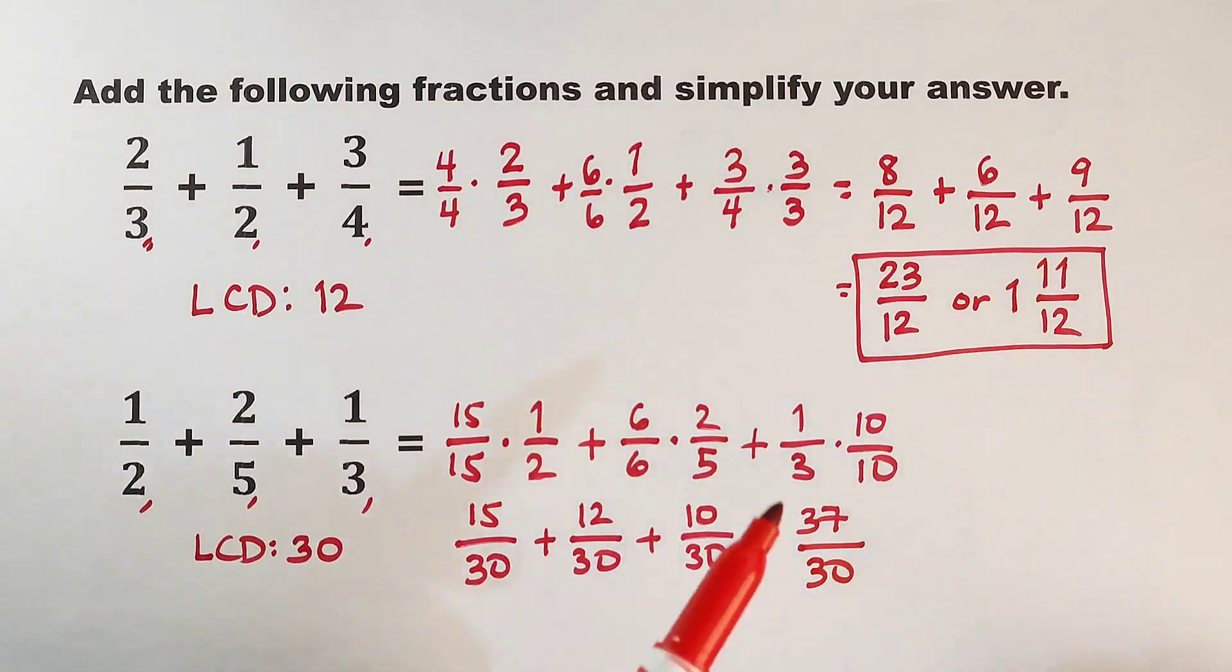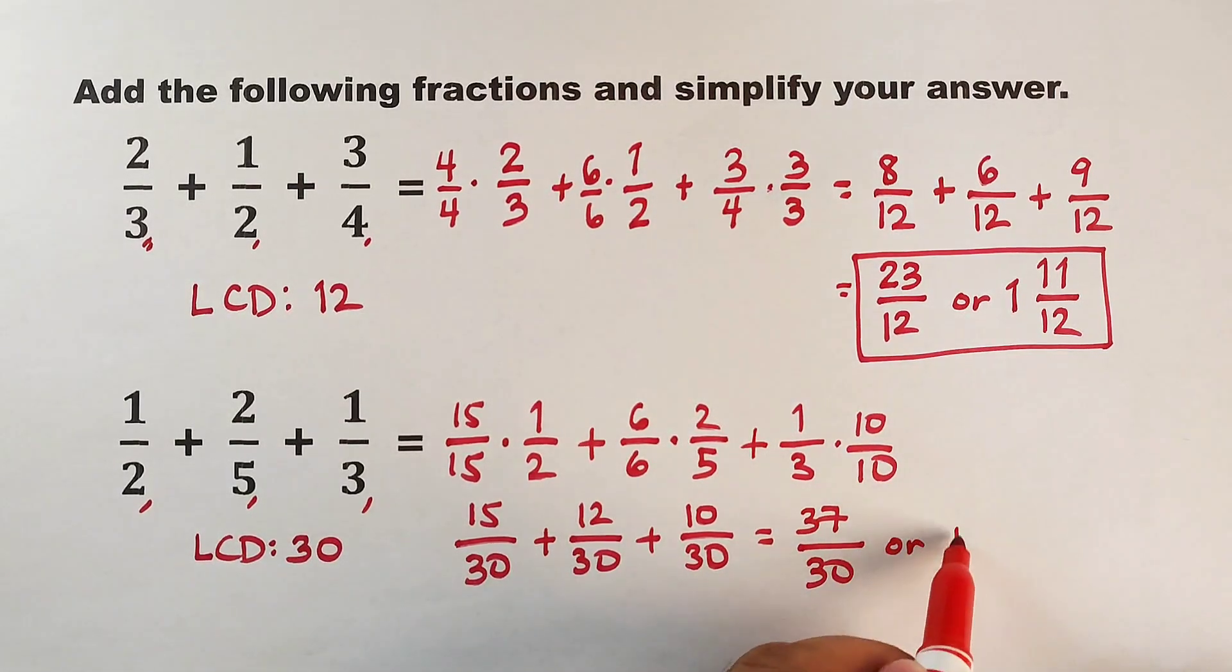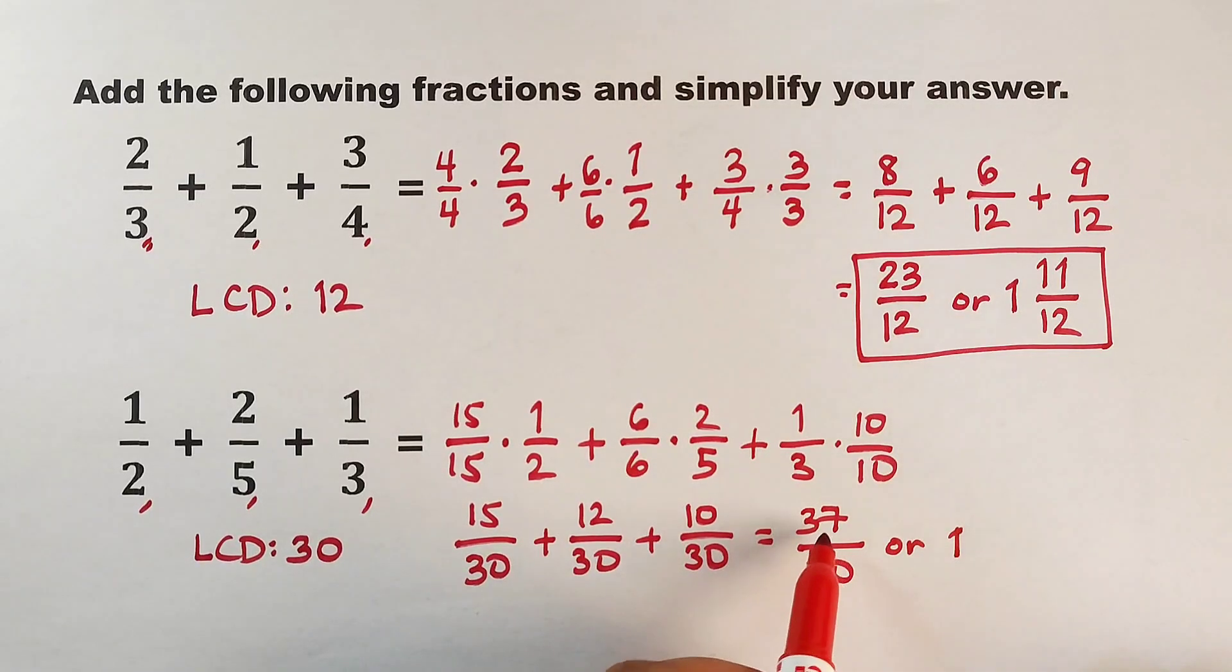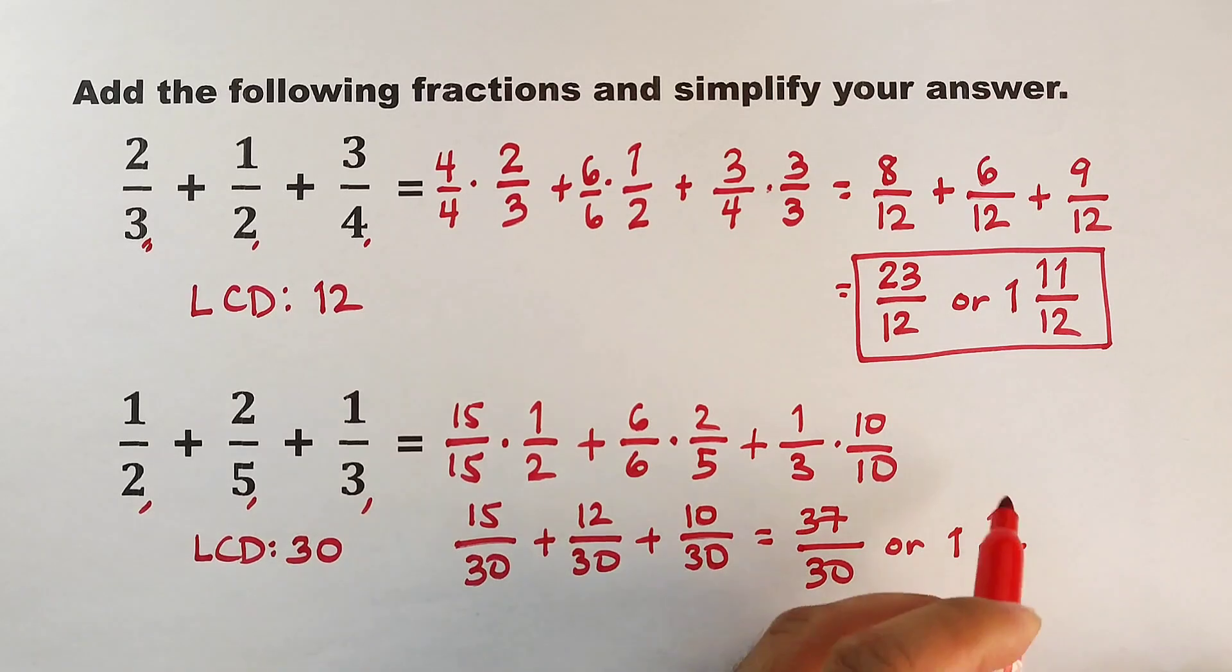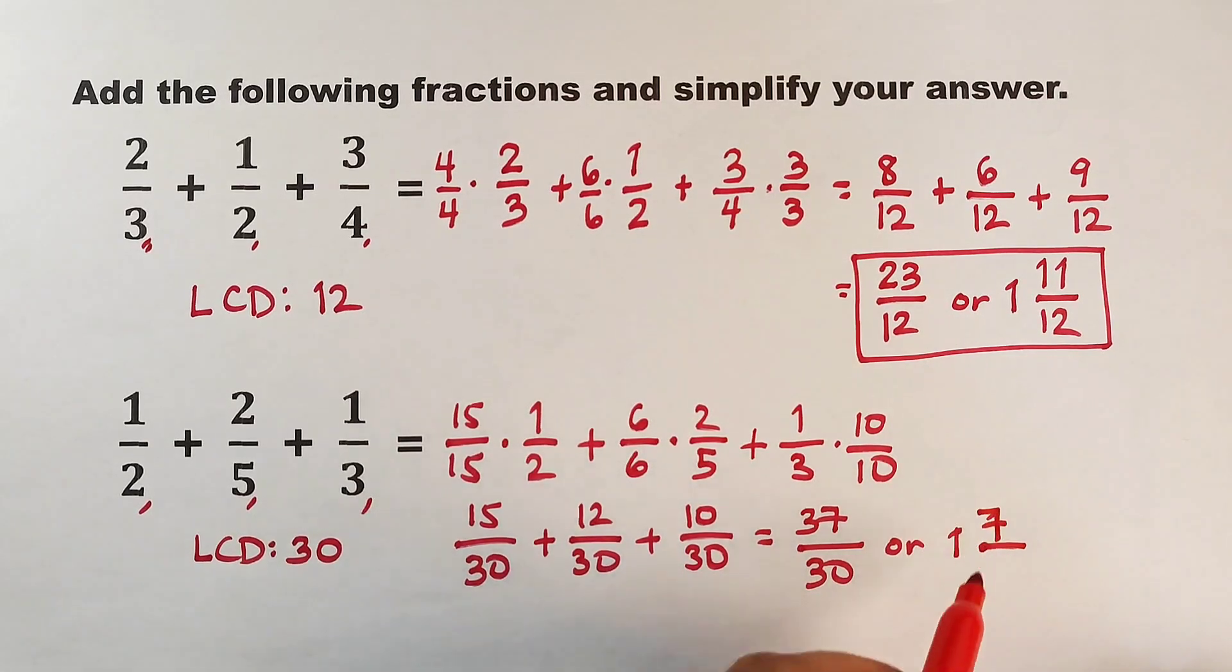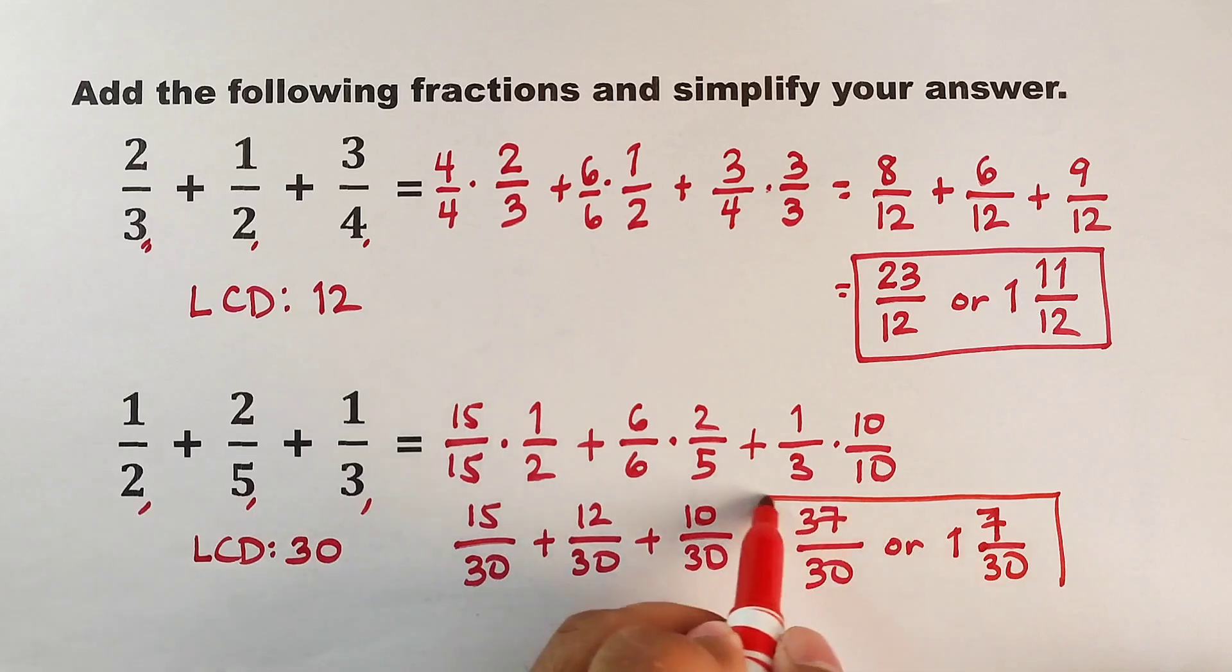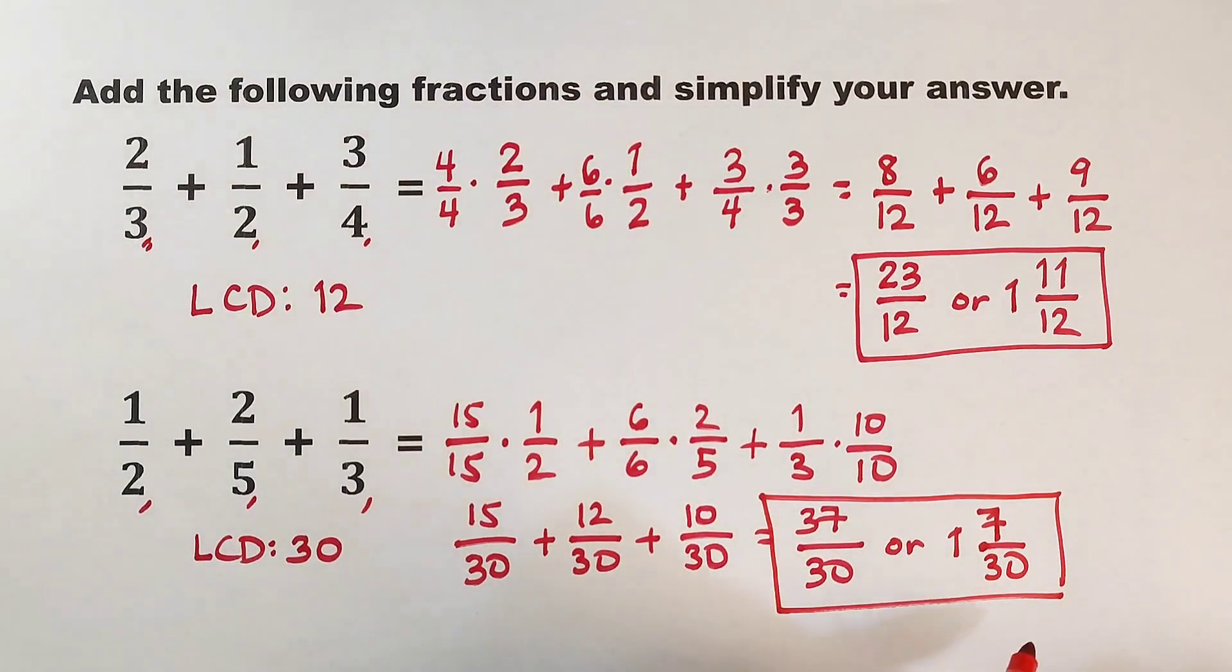As mentioned earlier, we need to express this answer in mixed number. So what is now the equivalent mixed number of 37 over 30? That would be 1. So how many 30s do we have in 37? 1. This must be 7 over 30. So this is the final answer for item number 2.